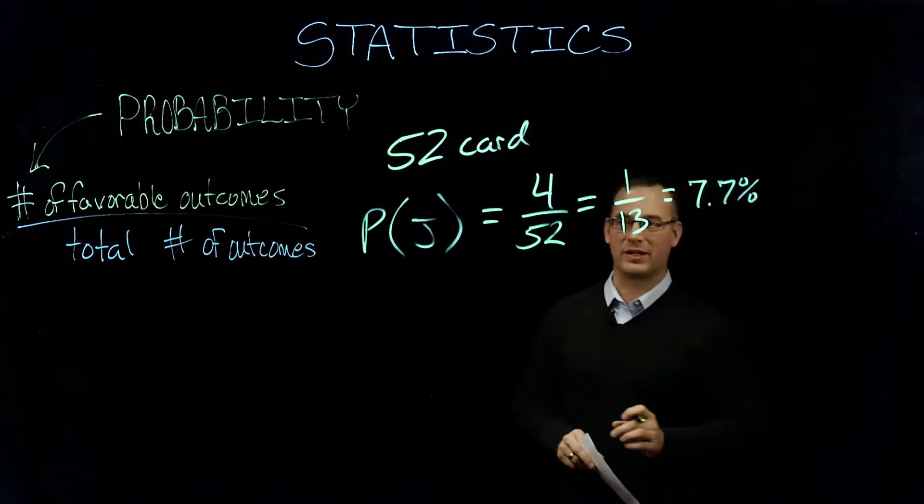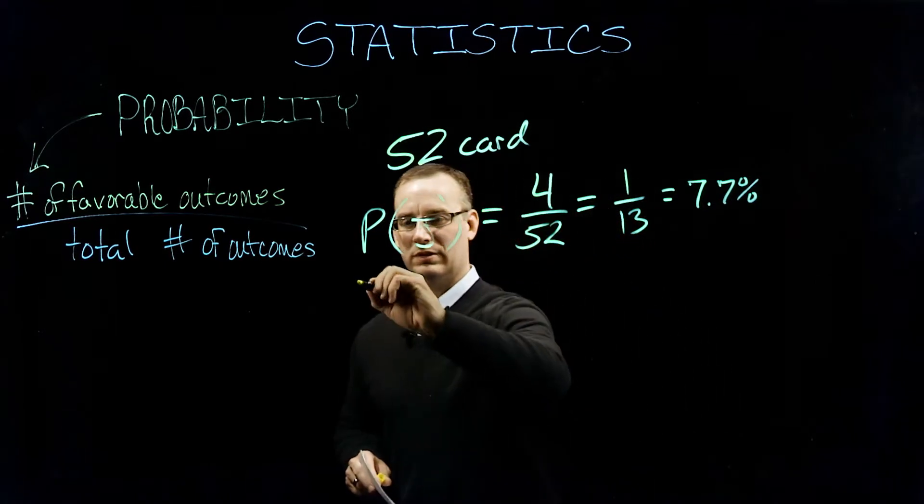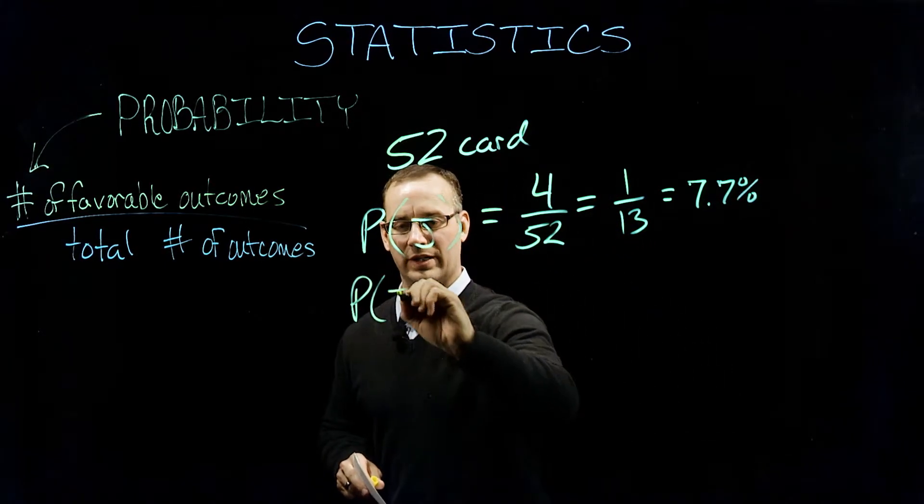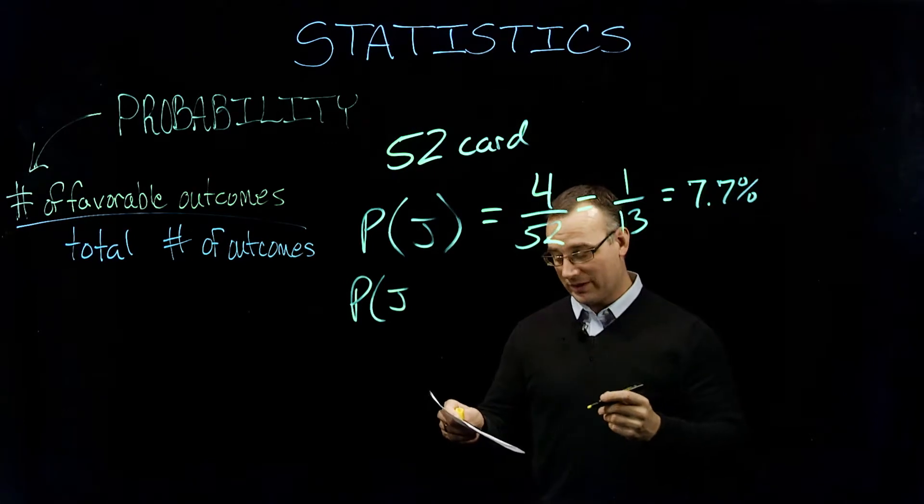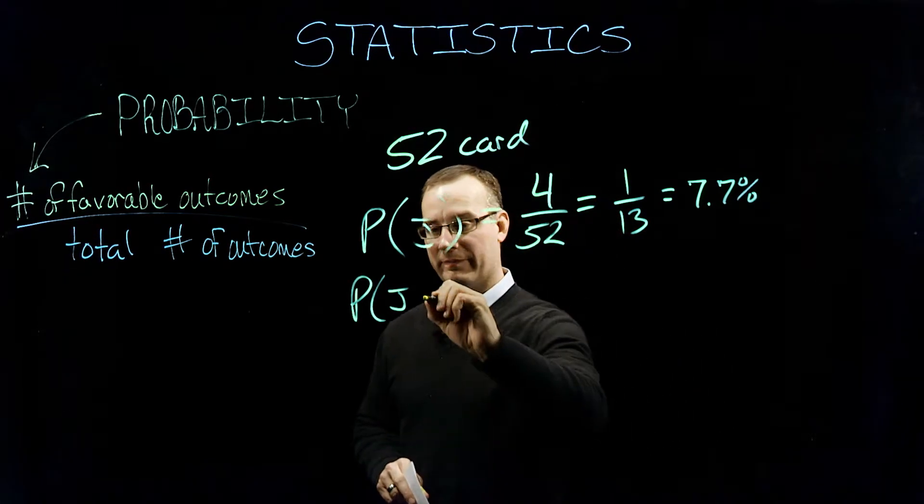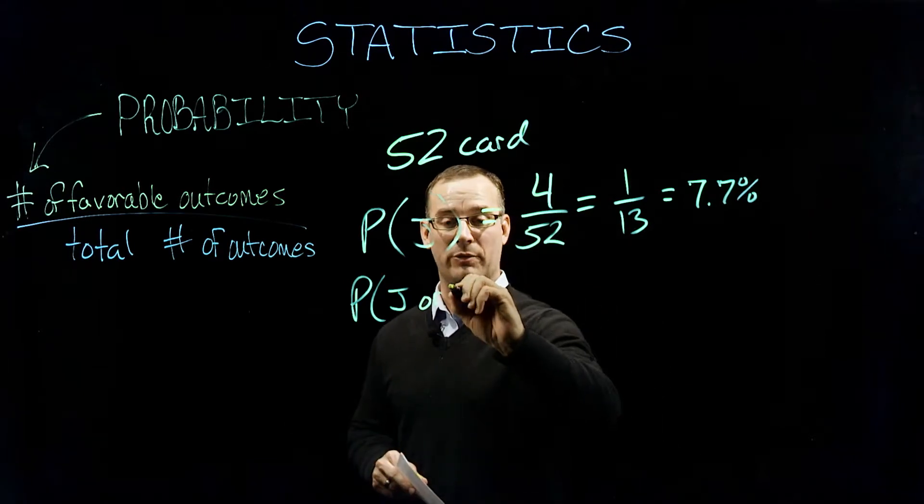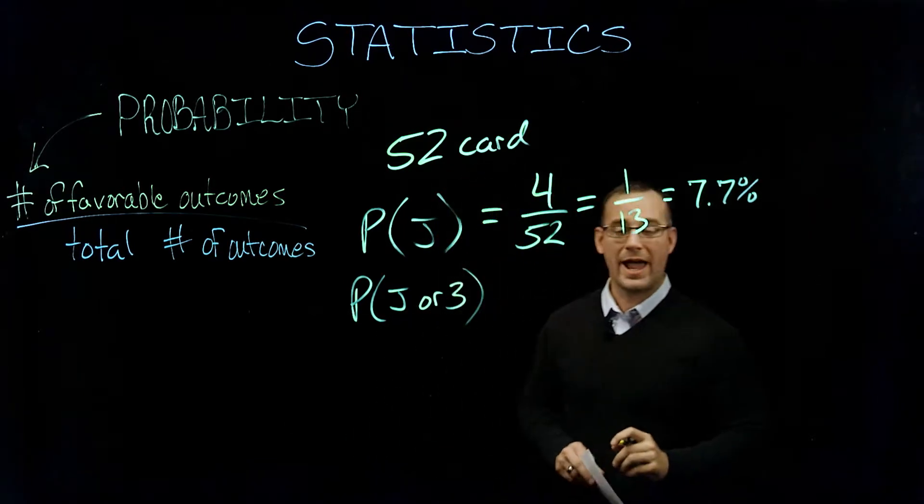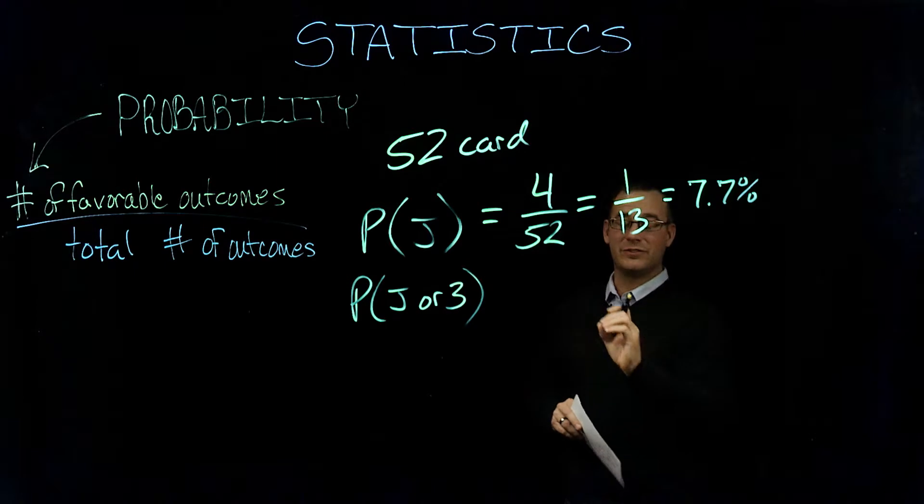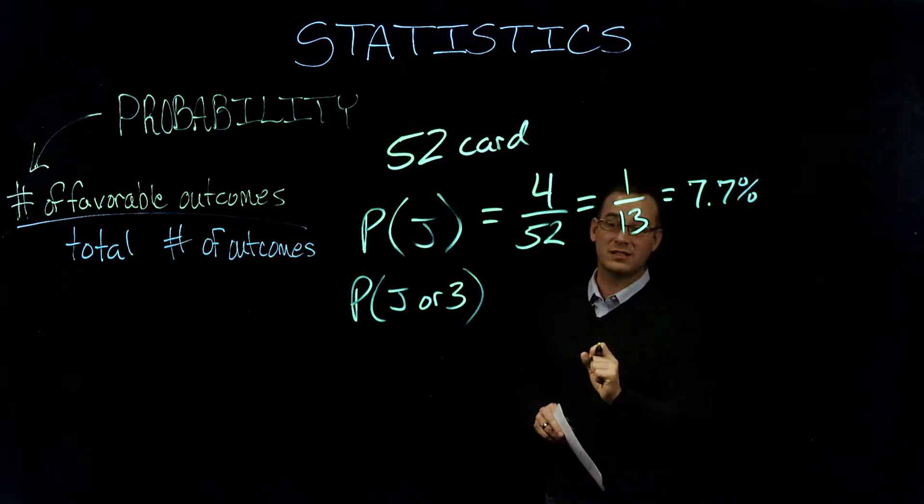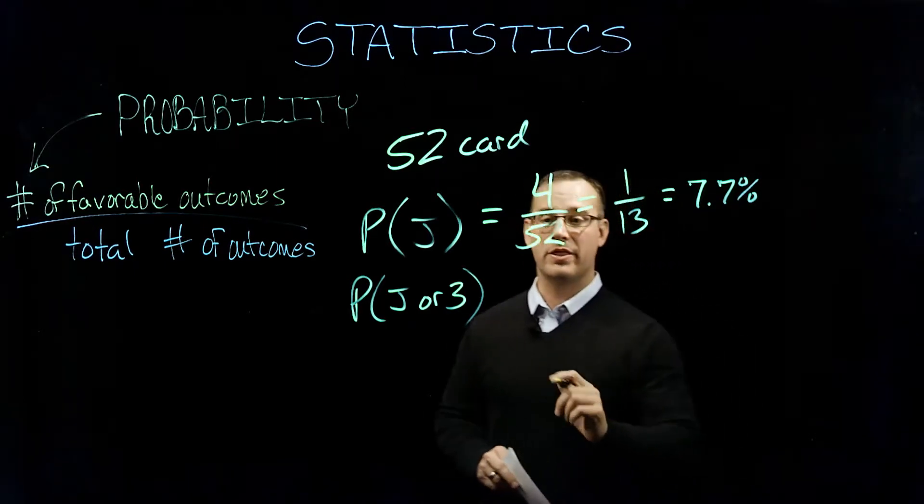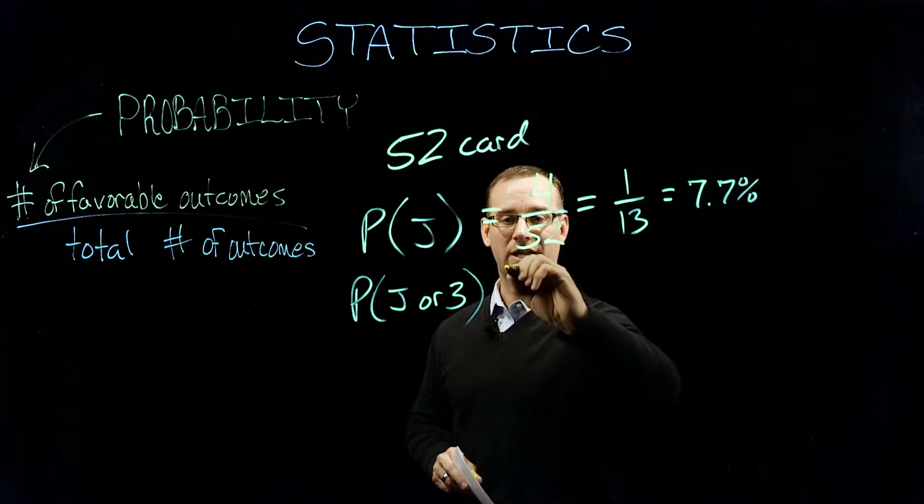A little bit more complicated. Let's work through a few examples here. So what if we wanted to draw a jack or just another random card, let's say a three. So now we want the probability of drawing one of those four jacks or one of those random threes.